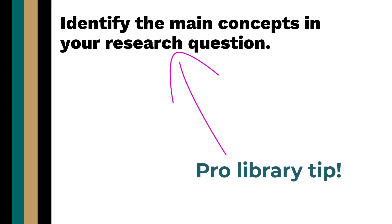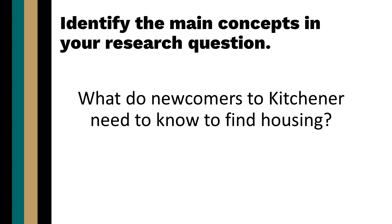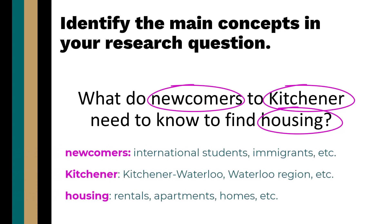Before starting your search, identify the main concepts in your research question. In this video, we'll demonstrate searches using the research question: What do newcomers to Kitchener need to know to find housing? Newcomers, Kitchener, and Housing are the three main concepts in the question. Prepare for the database search by brainstorming a list of related keywords for each of the main concepts.